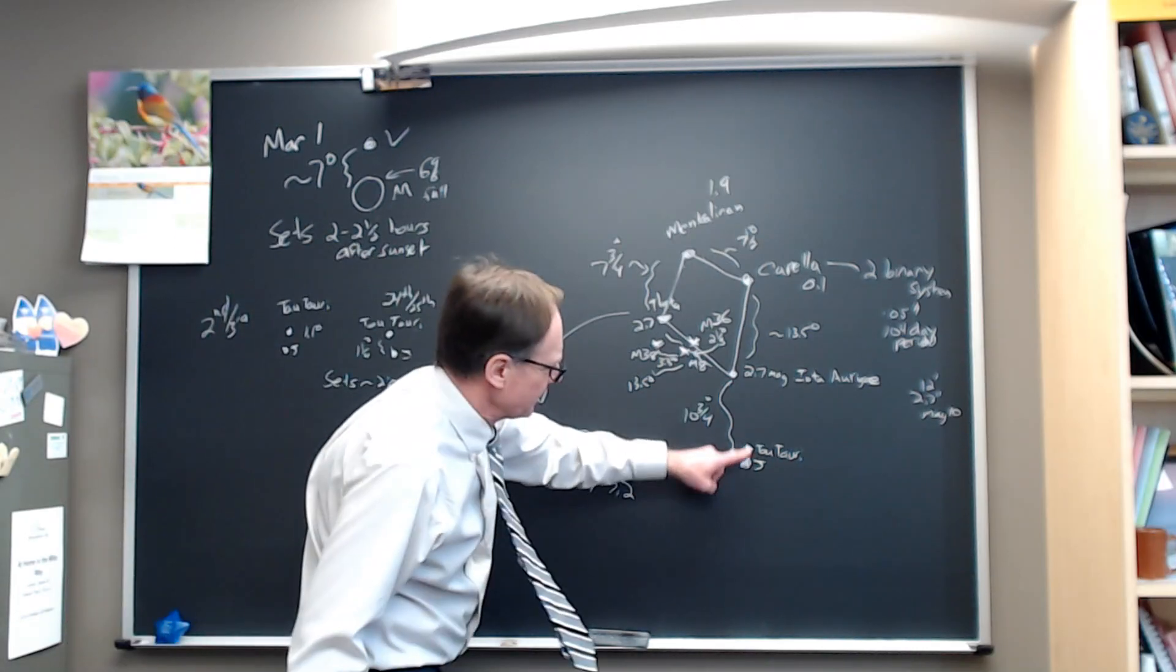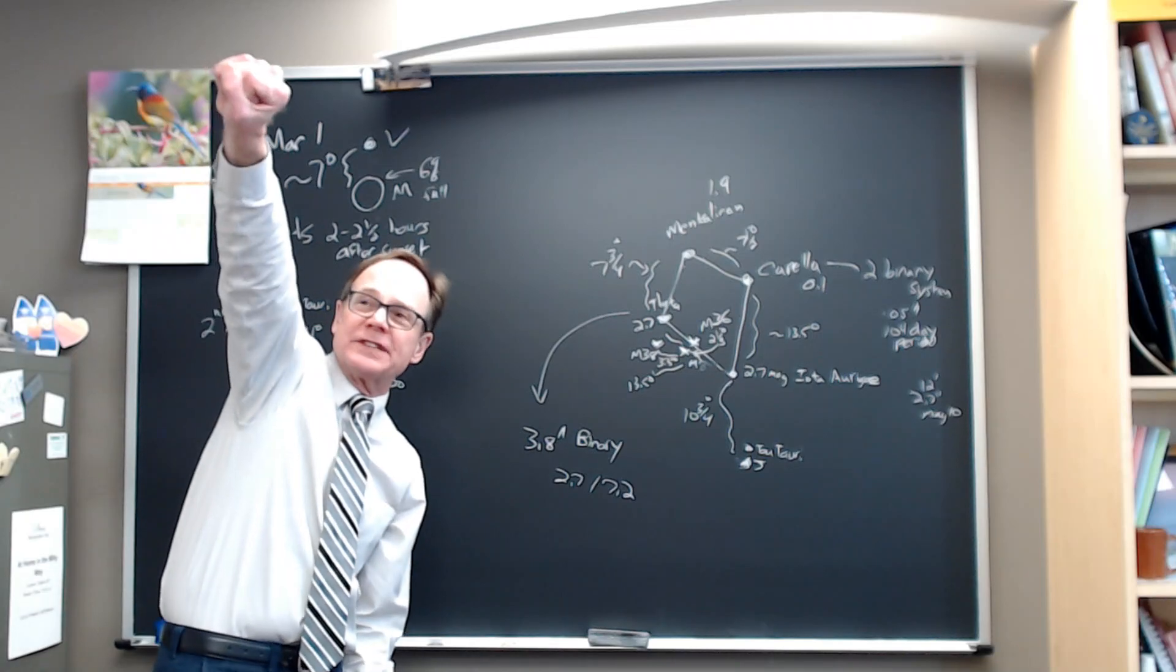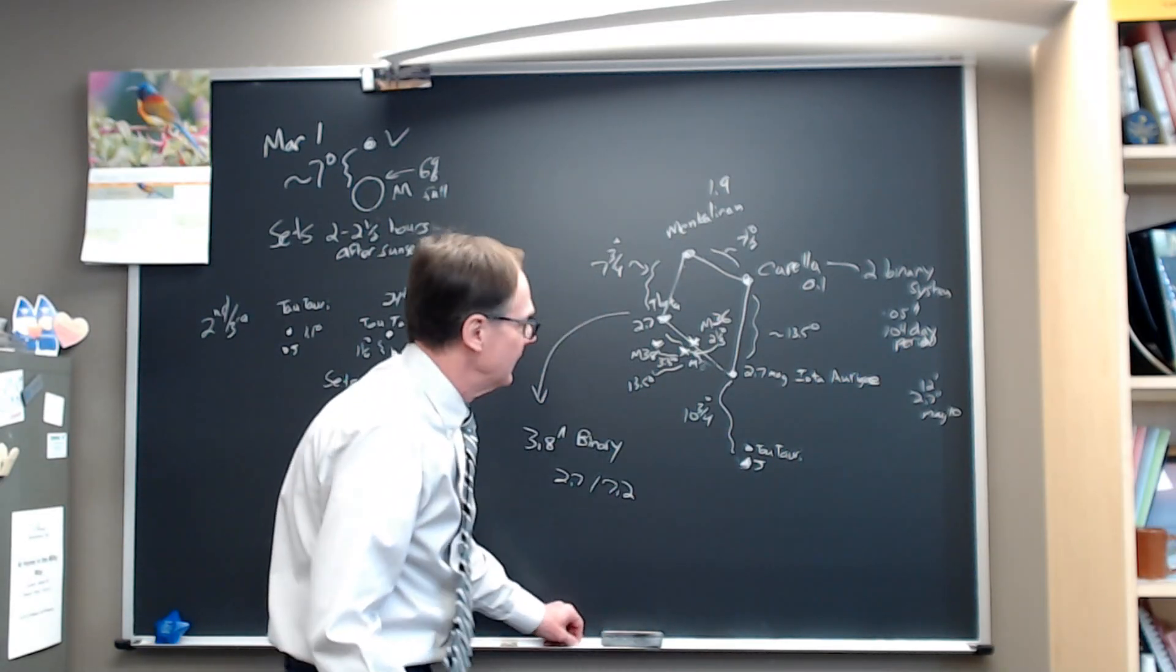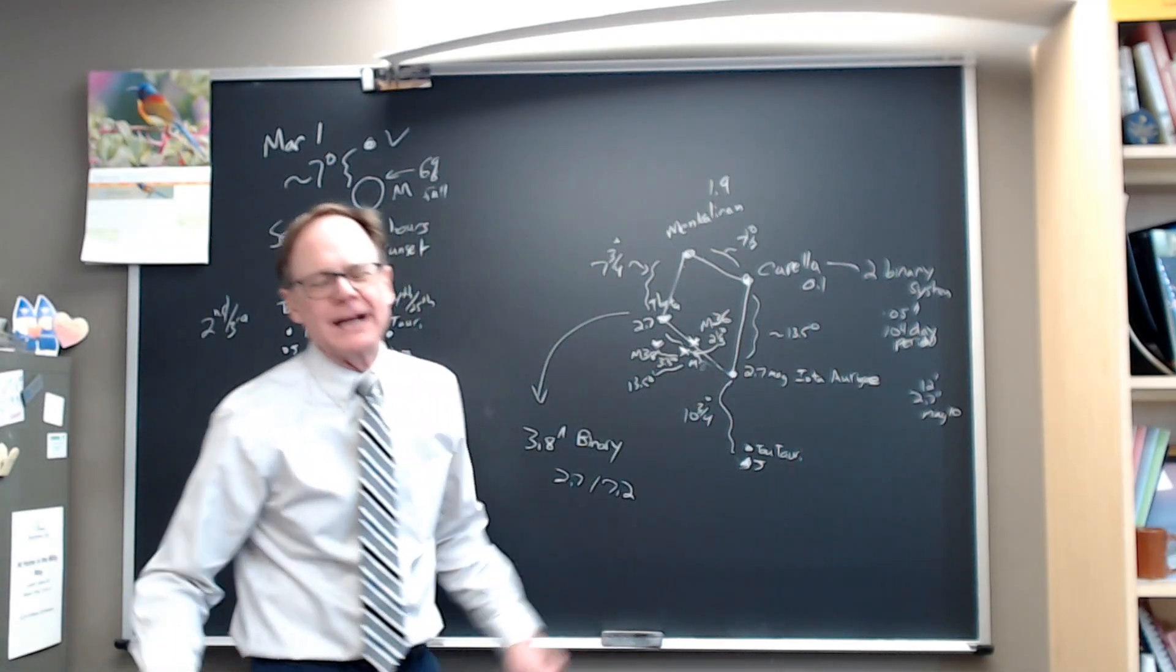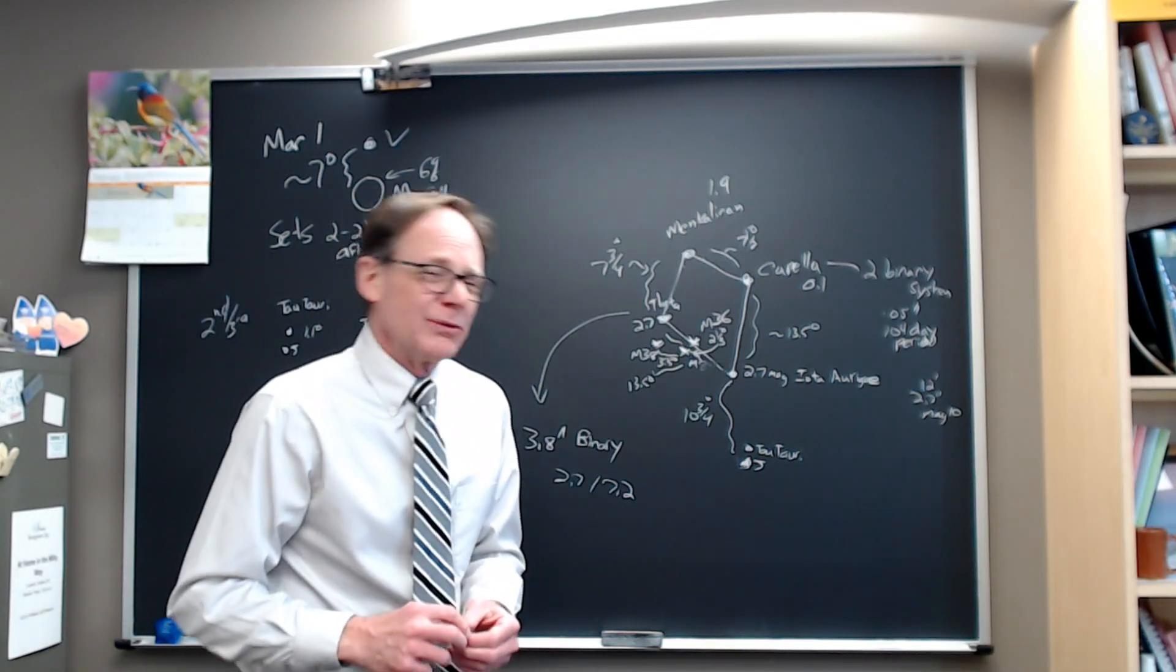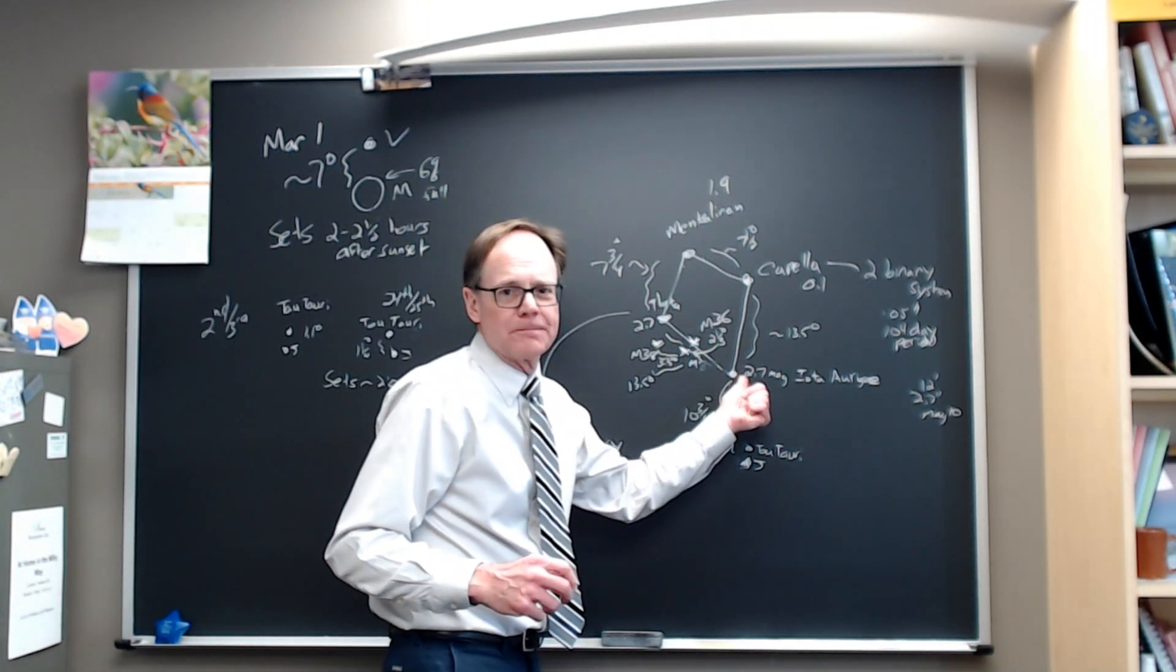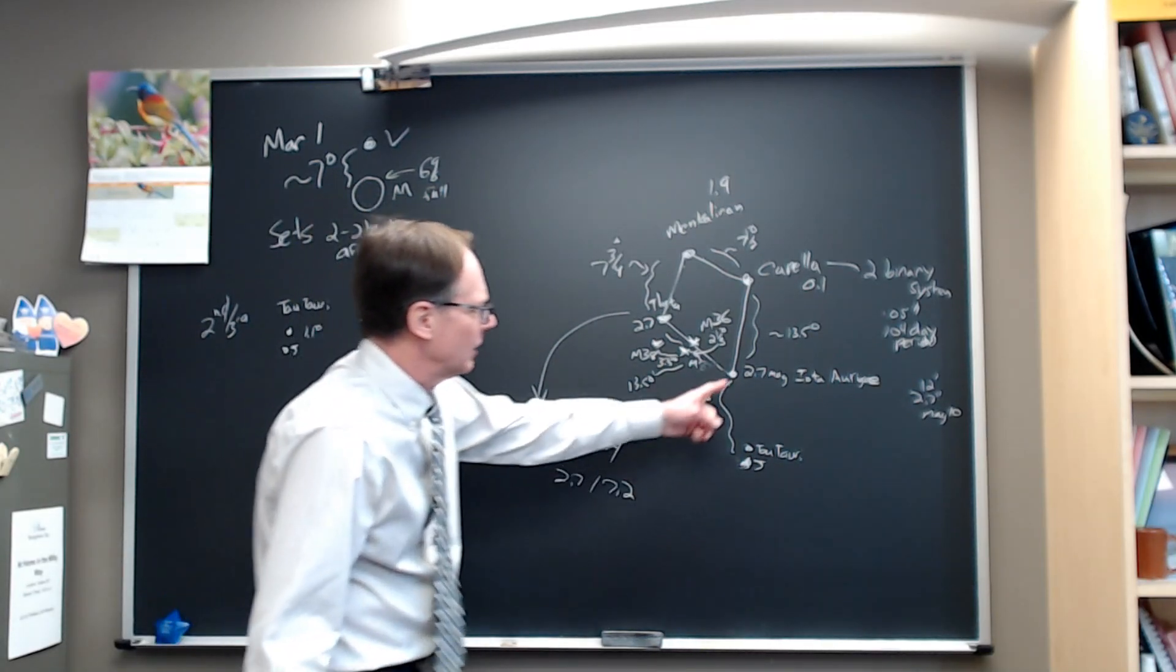Above the Jupiter-Tau Tauri pairing, you go ten and three quarters degrees above, basically one fist width to the north. You come to Iota Aurigae. This is the constellation of Auriga. It looks like a kite, as I've drawn it here. The bottom star of the kite is 2.7 magnitude. Remember, the magnitude system counts backward. Fainter stars have a higher number. We can see down reliably probably fifth magnitude if you've got pretty good skies. This is a star you ought to be able to pick out unless you're living in the middle of a city with a lot of light pollution.